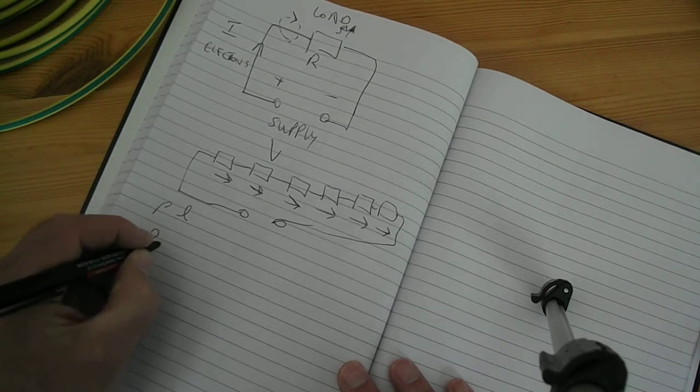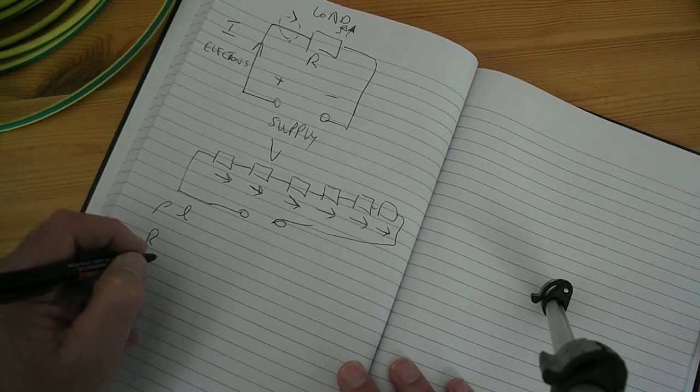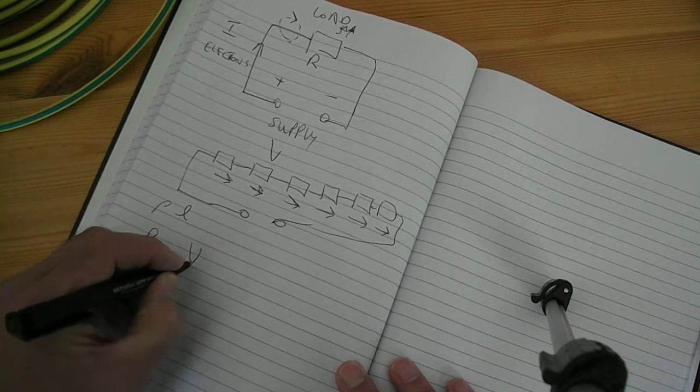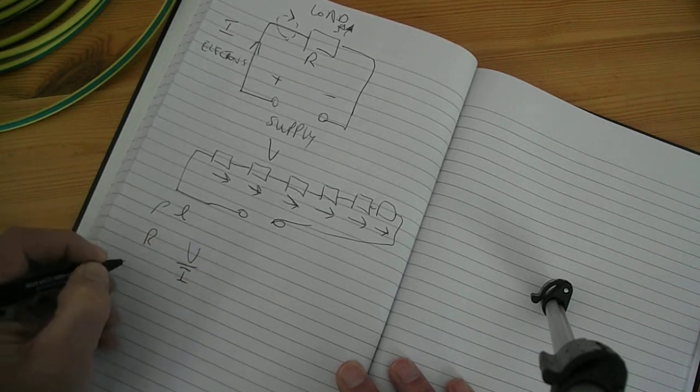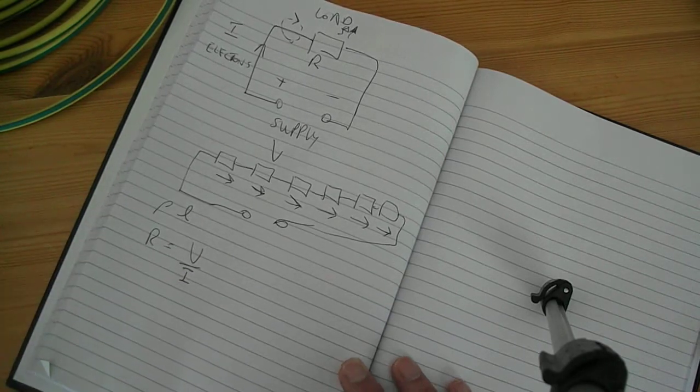We know that resistance is the ratio of voltage and current. So that's what we can say. Resistance is the ratio of these two things.